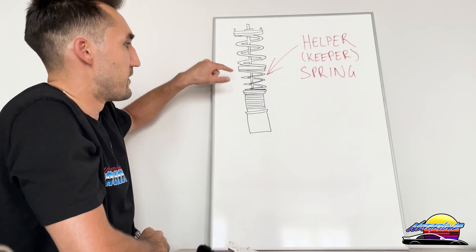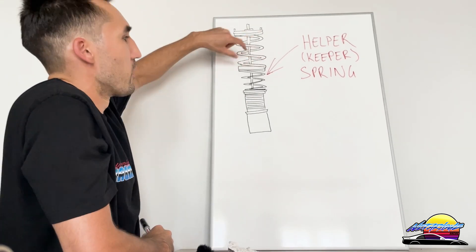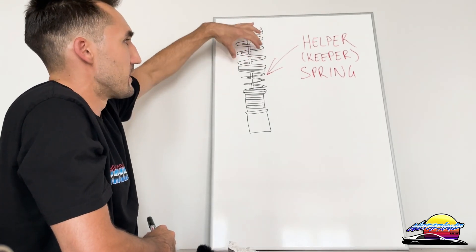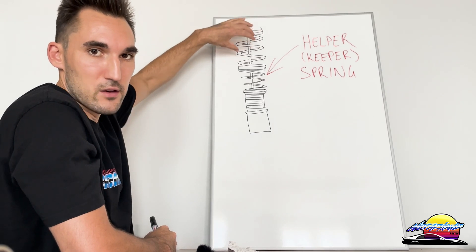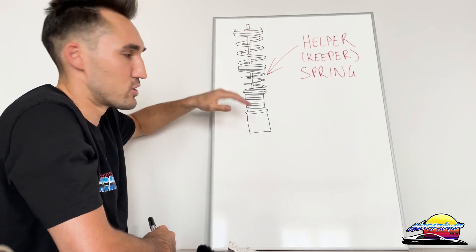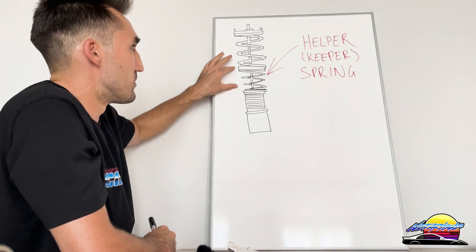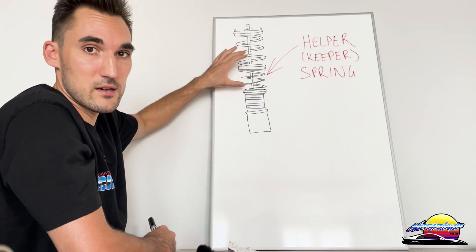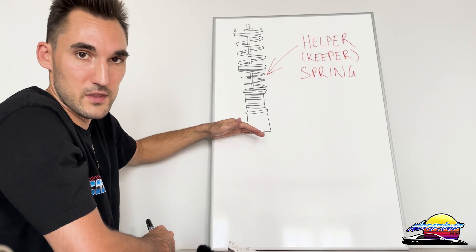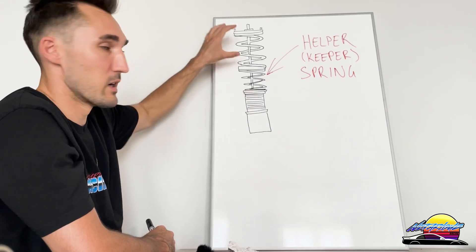What's going to happen is with this spring, if it didn't have the helper, you would get to a point where you keep lowering it and now all of a sudden this spring would just be loose and rattling around when the coilover was at full extension. However, by putting the helper spring in, it makes it under tension the entire time, even with the full extension of the whole coilover, and then the spring won't rattle around and will stay in place.